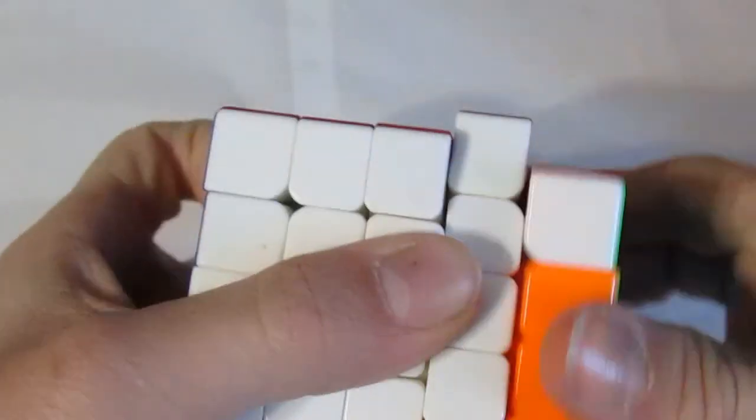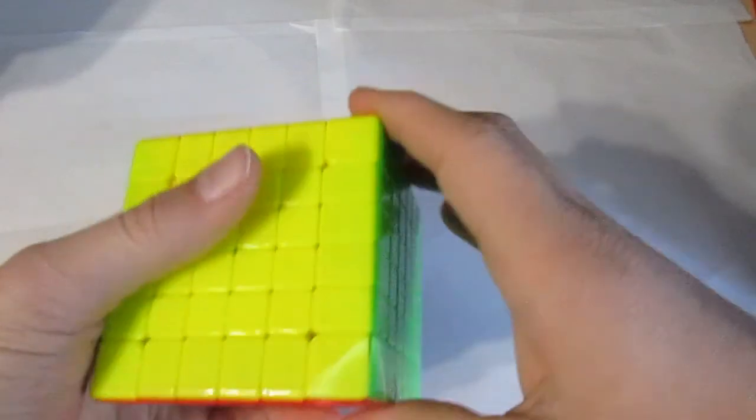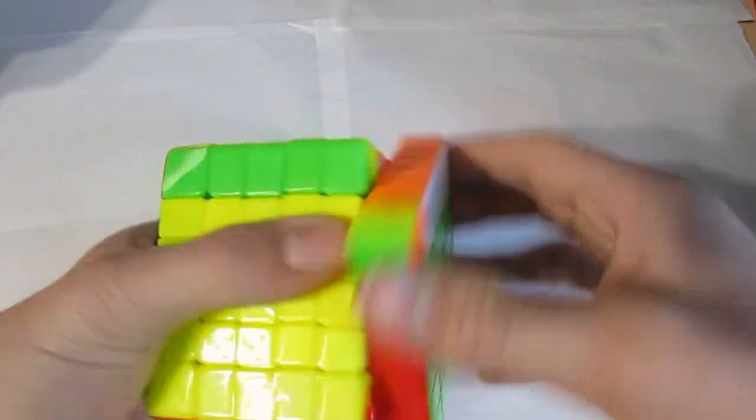For 5x5, it's the Yushin Cloud 5x5. Very nice. Up next is 6x6. I have this Cyclone Boys 6x6. It's the only 6x6 I have, but I don't compete in 6x6, so.